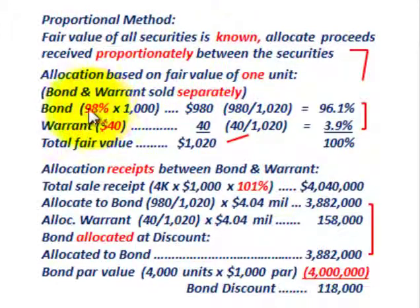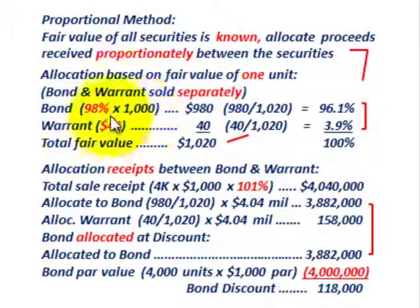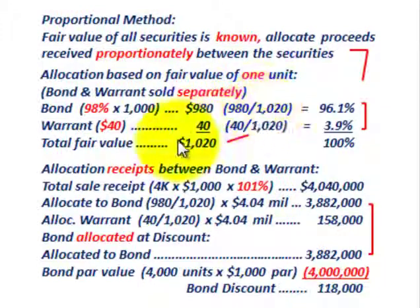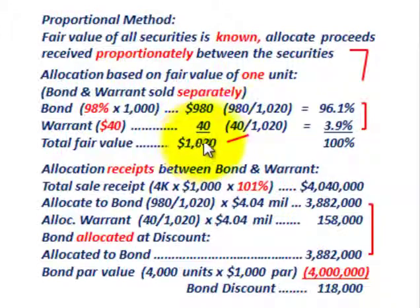Based on the separate selling price, the bond is allocated at 98% — that's 98% times the $1,000 par value, so the bond is worth $980. The warrant is given a market value of $40 per warrant. So the total fair market value of the bond and the warrant is $1,020. The allocation for the bond is 980 divided by $1,020, which equals 96.1% allocated to the bond, and 40 divided by $1,020 equals 3.9% allocated to the warrant.